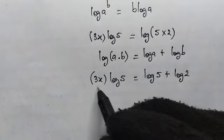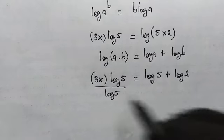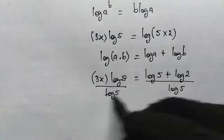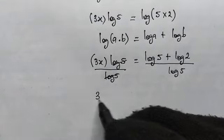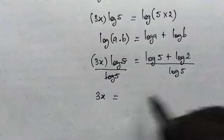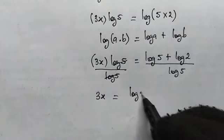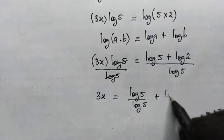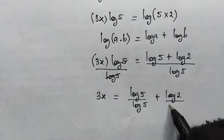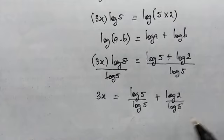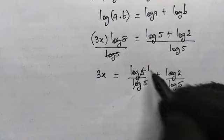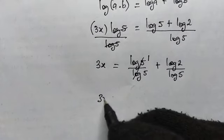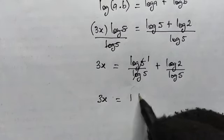Since we're solving for x, let's divide both sides by log of 5. This cancels on the left, and we're left with 3x equals — splitting the denominator — log of 5 divided by log of 5, plus log of 2 divided by log of 5. We know log of 5 divided by log of 5 cancels to 1.